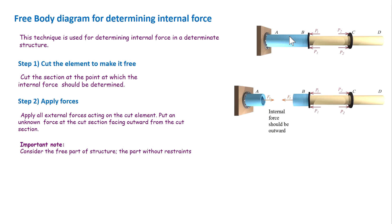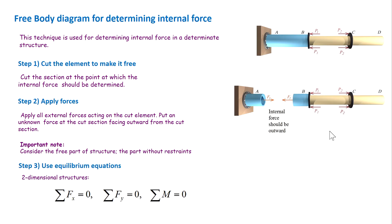Then put an unknown force outward from the cut surface, along with all external forces acting on the free part. Note that in a structure with restraints, we need to consider the part that is free of restraints. In this case, the left part is restrained and the right part is free, so we consider the right part. The last step is using the equilibrium equation to determine the internal force.